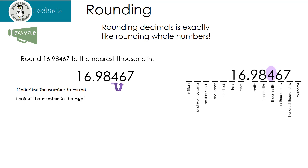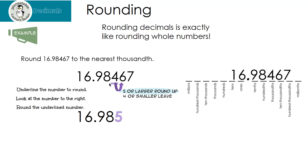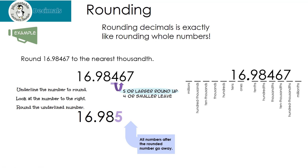I look to the number to the right, or look next door. Now I have to make a decision. Is the number next door five or larger? Then I'm going to round up the underlined number. If it's four or smaller, I'm going to leave the underlined number alone. So let's look at our answer. You're going to notice that I added one to my four, and I have a five. Then everything after that number is deleted, or you could put zeros there, but it's not necessary. How would we say this number in English? We would say 16 and nine hundred eighty-five thousandths.